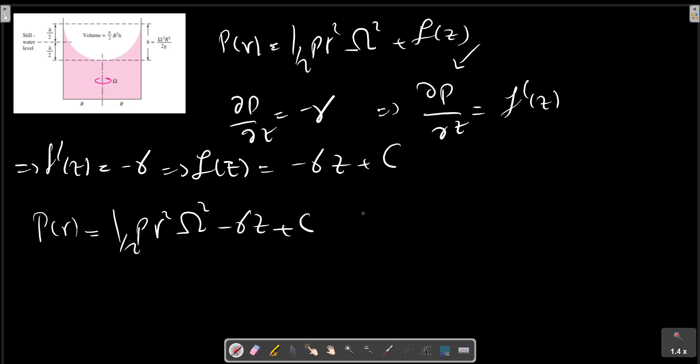If we have, for example, some boundary condition or initial value, we can calculate the constant C. For example, if P equals P zero at R and Z equals zero and zero, we can calculate C equals P zero. The pressure equation becomes as follows.